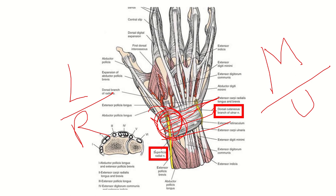This is the superficial branch of the radial nerve, which lies above the extensor retinaculum. On the other hand, on the medial or ulnar side, there is another nerve — this is the dorsal cutaneous branch of the ulnar nerve. So outside the extensor retinaculum we can see two structures: on the lateral side the superficial branch of the radial nerve, and on the medial or ulnar side the dorsal cutaneous branch of the ulnar nerve.